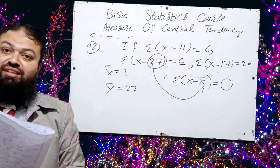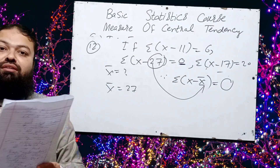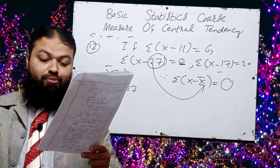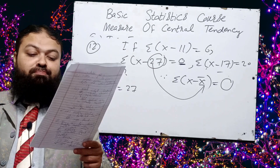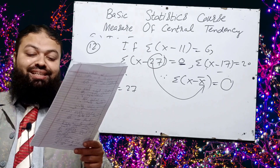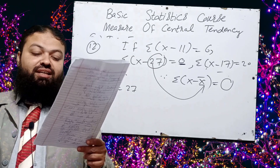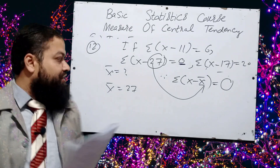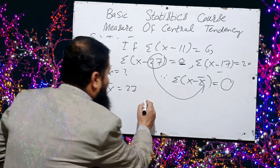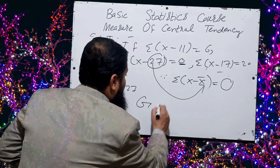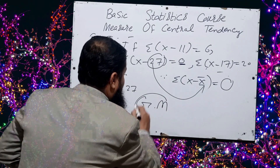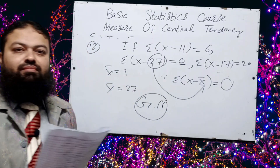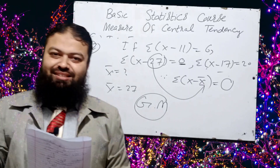Question number fourteen, the last one for today's lecture: for computing the average percentage increase in human population, the suitable average is geometric mean. Assalamu Alaikum.